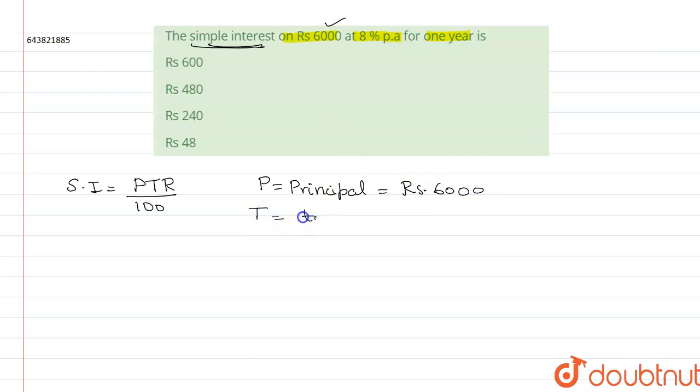T is the time. Time here is for 1 year. And R is rate of interest. The rate of interest here is given as 8% per annum.